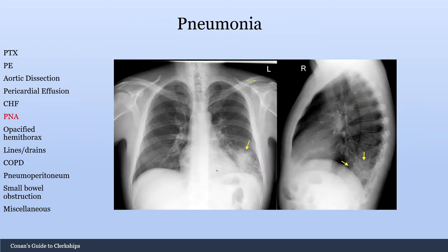Now let's move on to pneumonia. The most important thing is identifying the location of the pneumonia. You can see this consolidation here, but you need to always have a lateral X-ray to truly know the location. Here you can see this consolidation on the lateral — this is classified as a left lower lobe pneumonia.